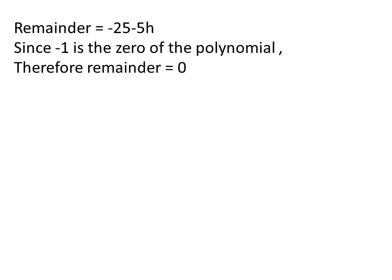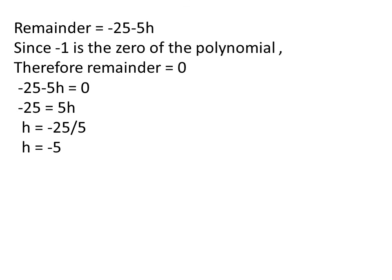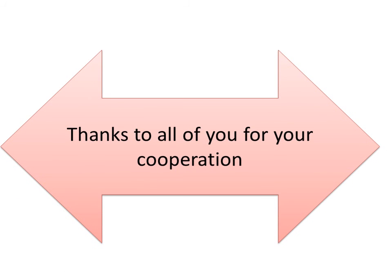Since -1 is the zero of the polynomial, the remainder equals 0. Comparing both remainders: -25 - 5h = 0. Moving the constant to the other side: -25 = 5h, and dividing both sides by 5 gives h = -25/5, which reduces to h = -5. In this way you can find the quotient and remainder by using synthetic division. Now you have to solve this exercise and give your best. Thanks to all of you for sharing your precious time. Allah Hafiz.